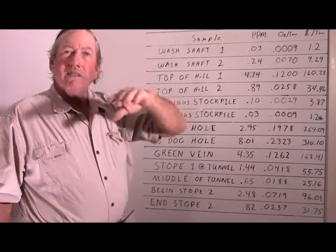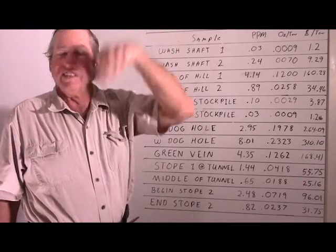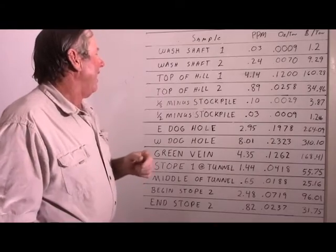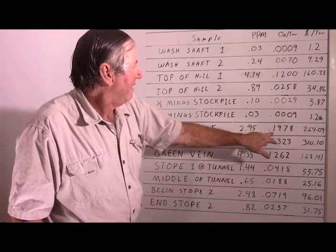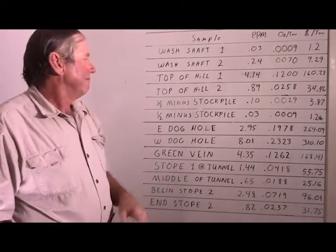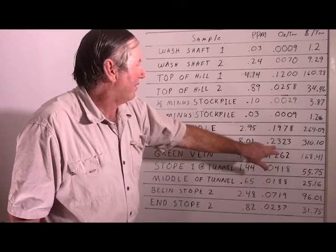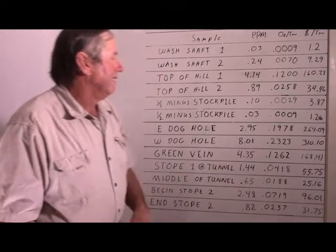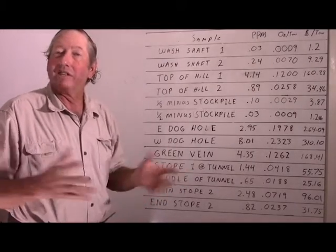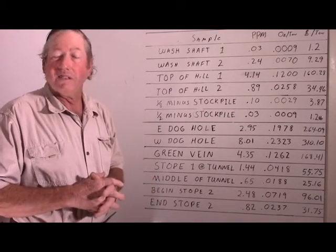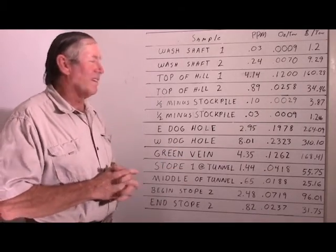The east dog hole was up on top of the hill above the stopes, on the hill where I was filming from. There were two little dog holes. The east dog hole — I can see why they dug it, the numbers aren't bad, though not great. The west dog hole had even better numbers — a quarter of an ounce to the ton, not bad. Too small, or whatever the reason, they never got around to it — shut down because they were stoping the other area. It was just another mineralized zone they found but never developed in any substantial manner.